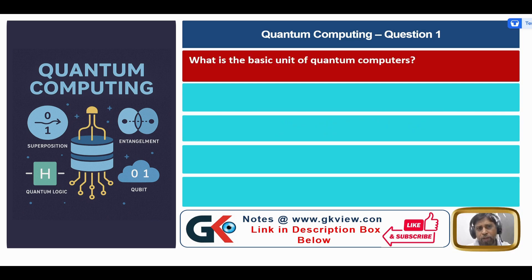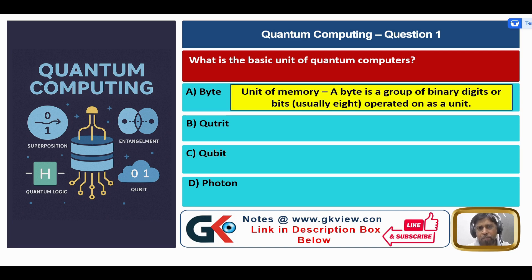Question 1: What is the basic unit of quantum computers? A. Byte, B. Qubit, C. Qubit, D. Photon. Let us see the meaning of all four options. A Byte is a unit of memory — a group of binary digits or bits, usually 8, operated on as a unit.